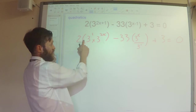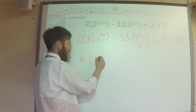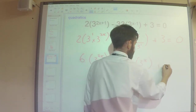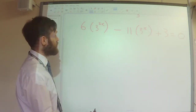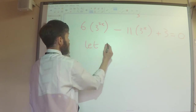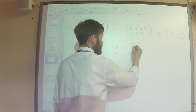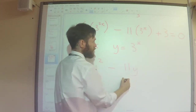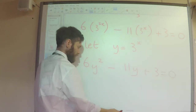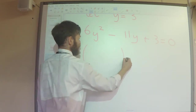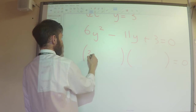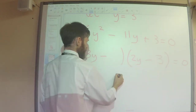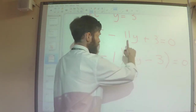And then we can simplify a little bit. The 2 times the 3 gives 6, so I've got 6 lots of 3 to the power 2x. The 33 divided by 3 is 11. And then we can make a substitution because we've got our hidden quadratic now. We can say let y equals 3 to the power x. So this is y squared, this is 11y. We can then factorise this — that's going to be 2 minuses, a 3 and a 1. So we've factorised it.